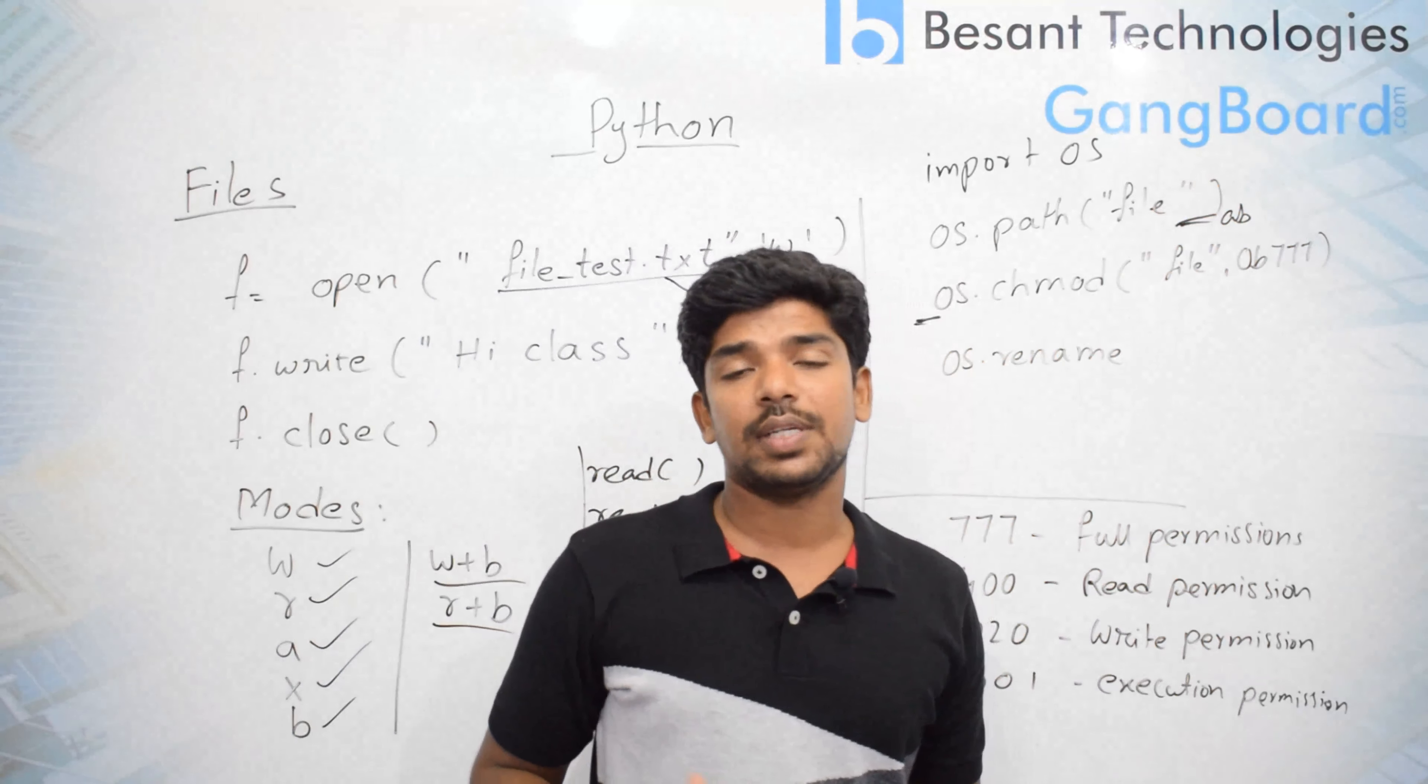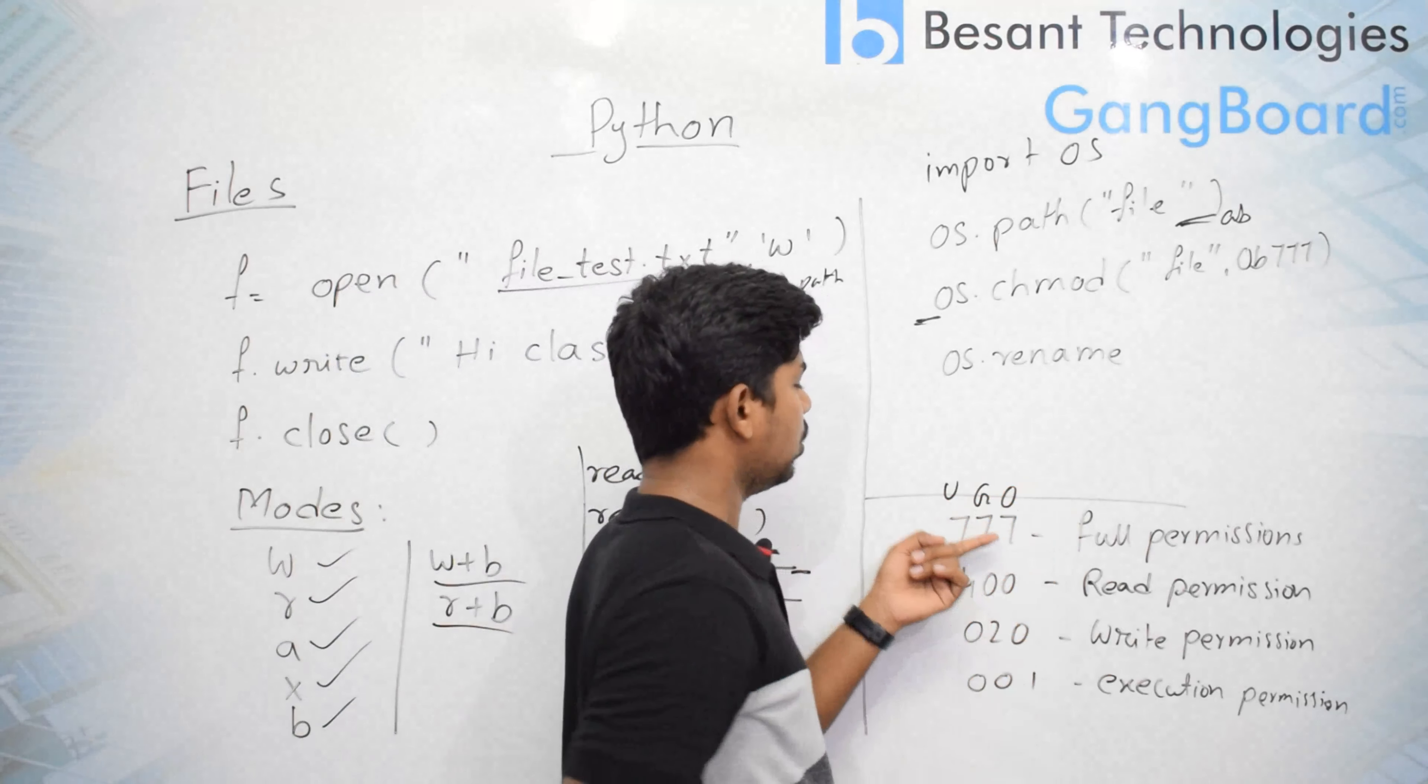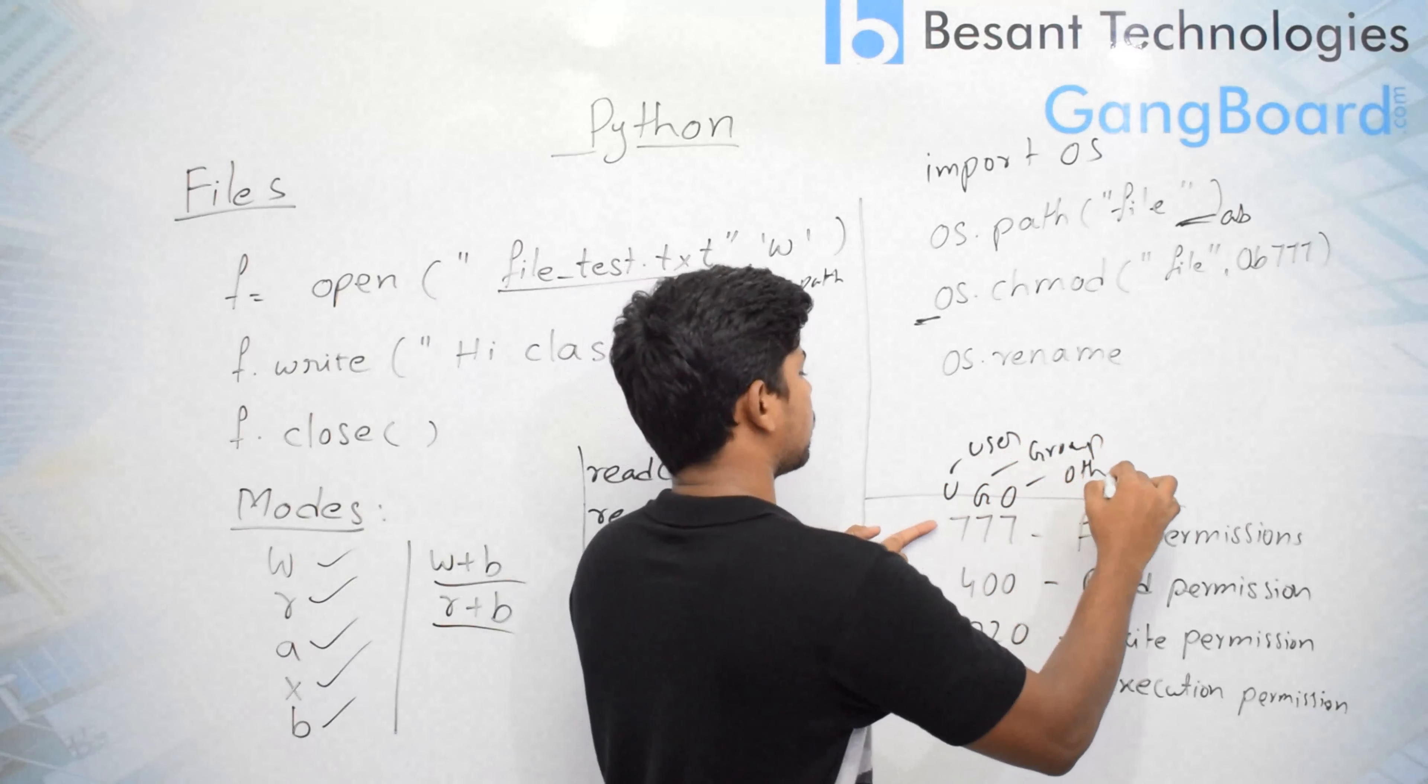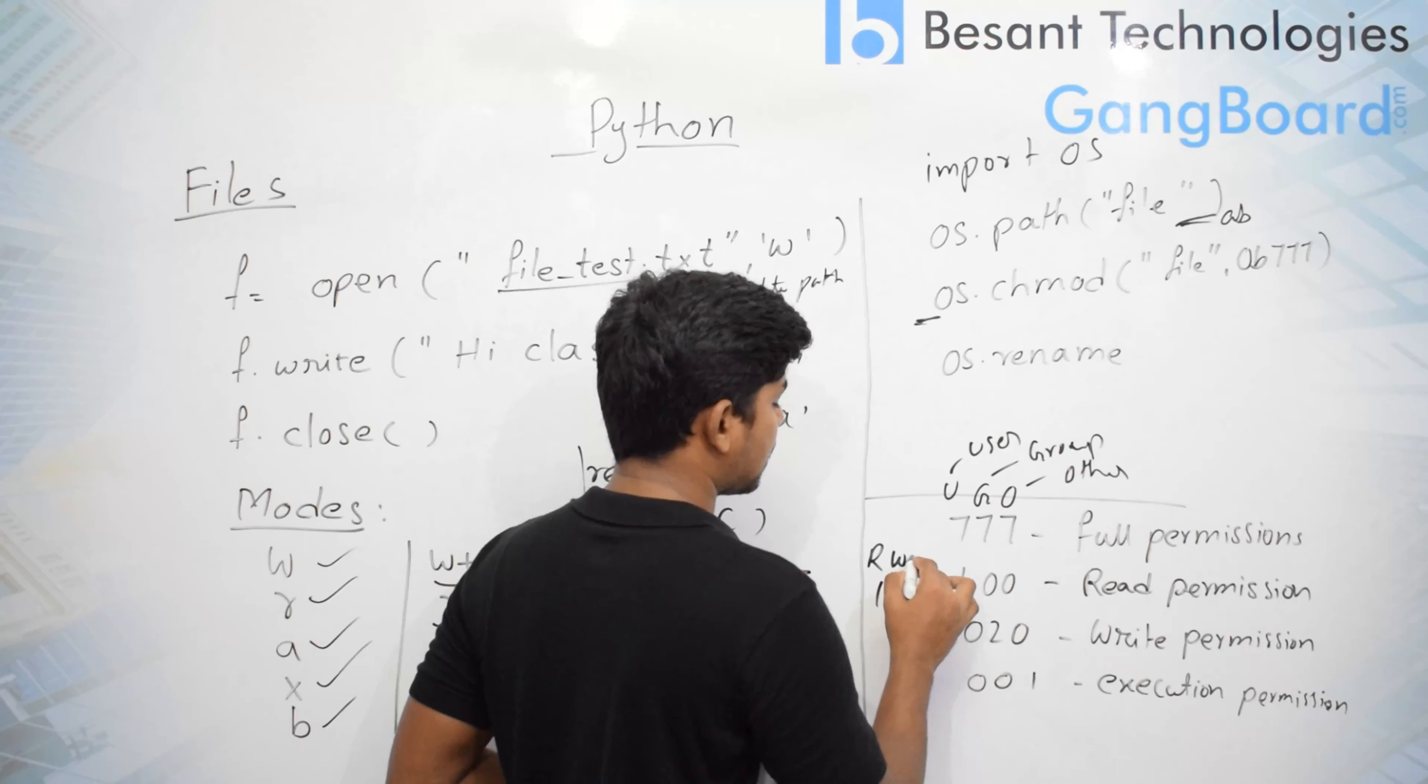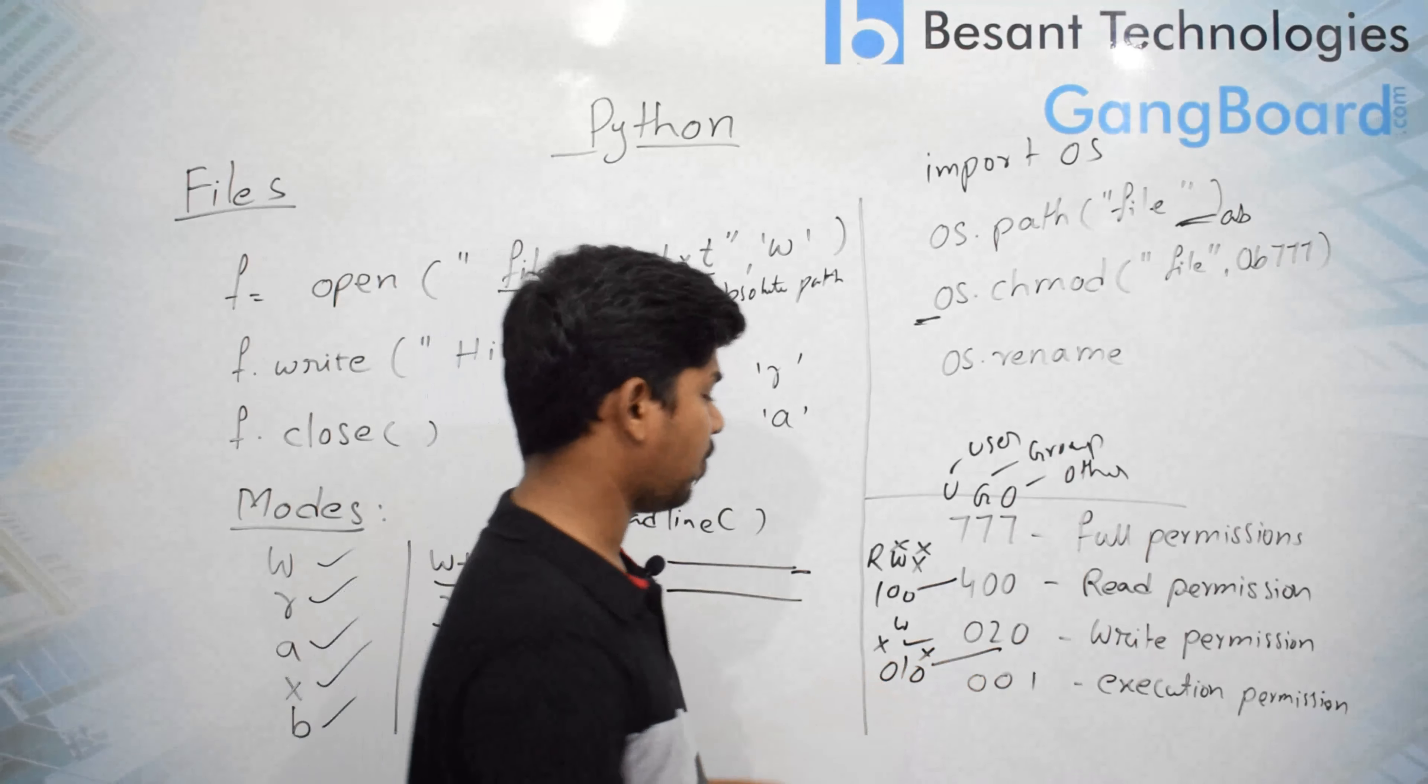For files we can set the permissions. Here I have certain permissions written. It is for user, group, others - UGO. When we give 777, it will be the full permissions. 400, that means I am giving only - binary equivalent of 4 is 100 - that means I am giving only read permission, whereas write and execution permission I am not giving. Coming to 2, binary equivalent is 010. So I am giving only write permissions and I am not giving the read permission and execution permission.